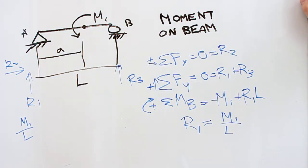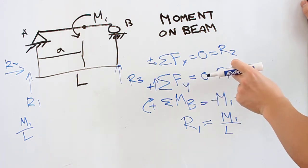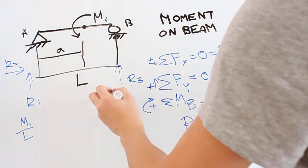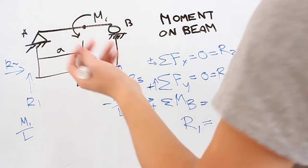And then we plug that back into this equation where M1 plus M1 over L plus R3 equals 0. Well, R3 is just going to be negative M1 over L. And that makes sense.